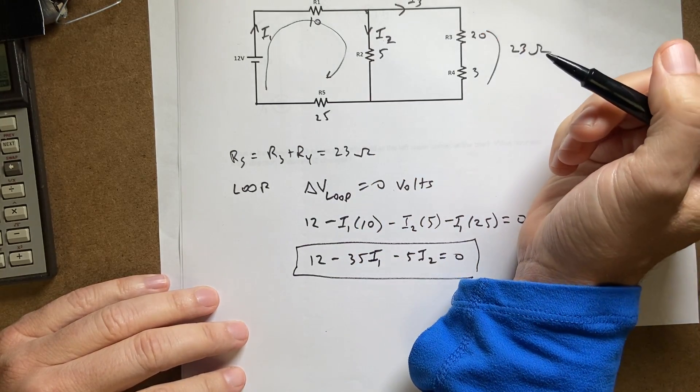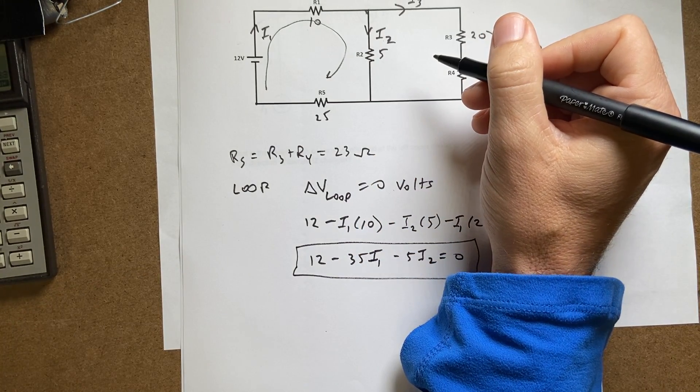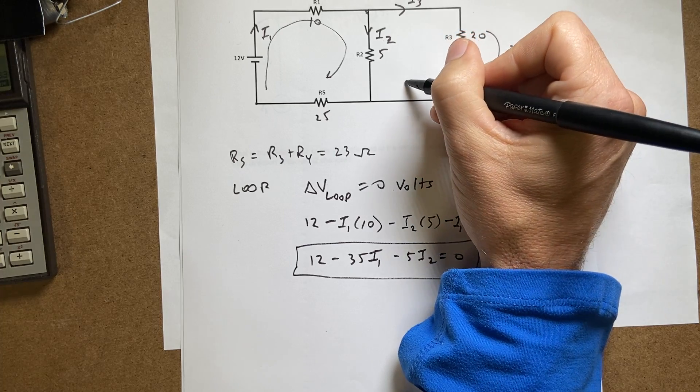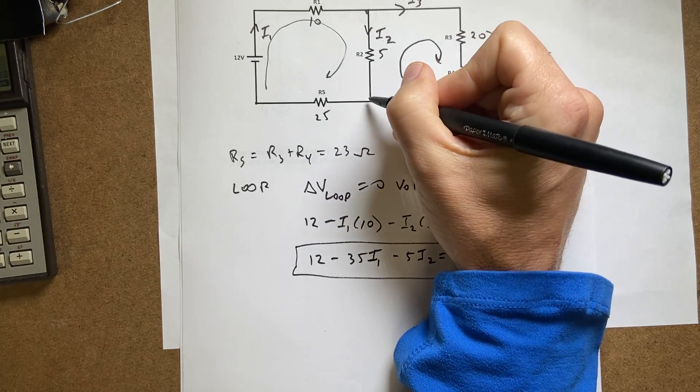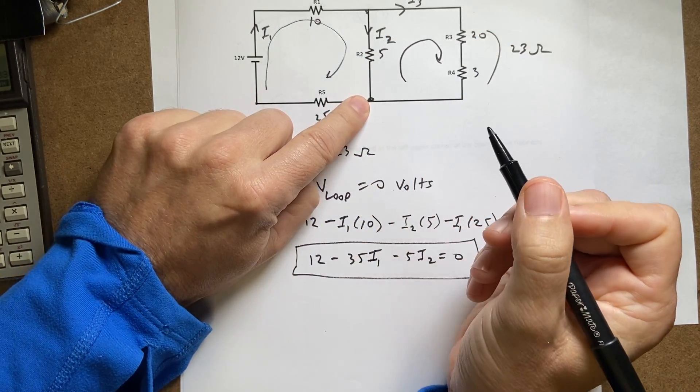Now let's go and do this. Let's see which loop should I do. I'm just going to pick this one. So I'm going to start here and I'm going to go around.